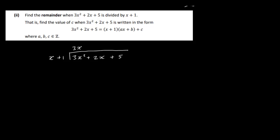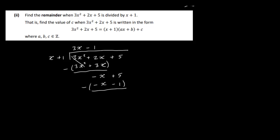Let's do it by long division. We have x plus 1 dividing into 3x squared plus 2x plus 5. x into 3x squared is 3x. Multiply 3x by x plus 1: 3x squared plus 3x. Subtract — we end up with minus x. Bring down the 5. x into minus x is minus 1. Multiply: minus x minus 1. Subtract — this disappears and we're left with a remainder of 6.